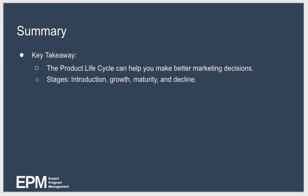In summary, using the product lifecycle to understand how products change over time can help you make better marketing decisions. All products begin life in the introduction phase. Not all products make it beyond this stage, but those that do enter the growth stage — identified by rapid sales growth. Eventually a market becomes mature and sales begin to slow: this is the maturity phase. Although strategies exist to extend this stage, eventually the product enters the decline stage, where sales are falling quickly, competitors leave the market rapidly, and most products end their life being removed from the market altogether.